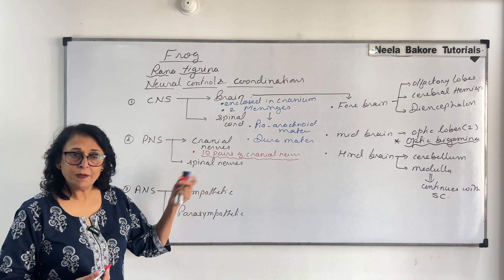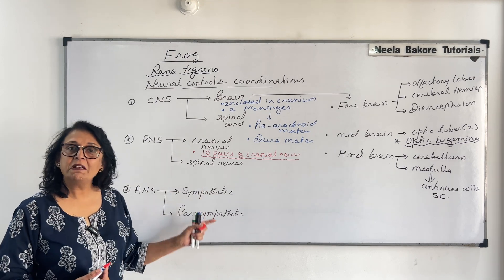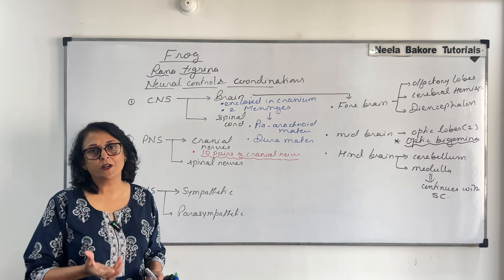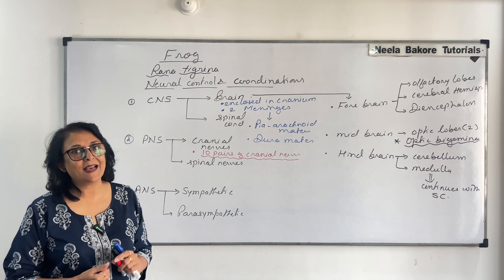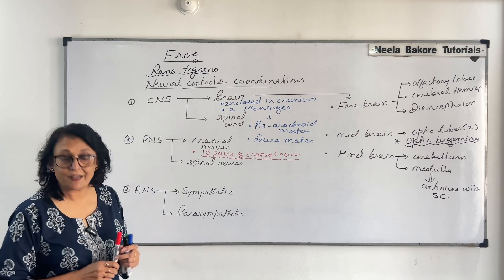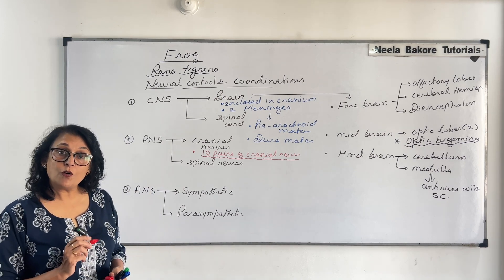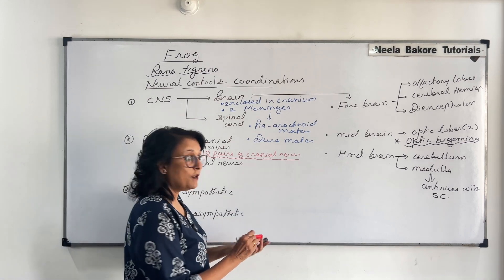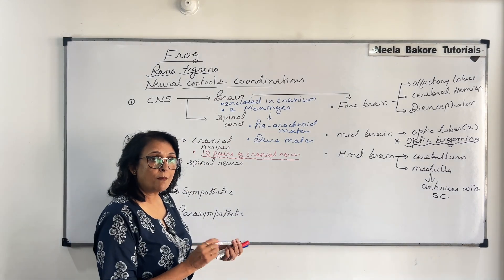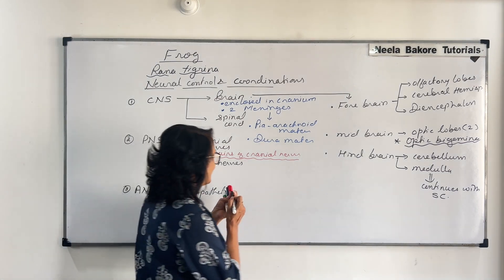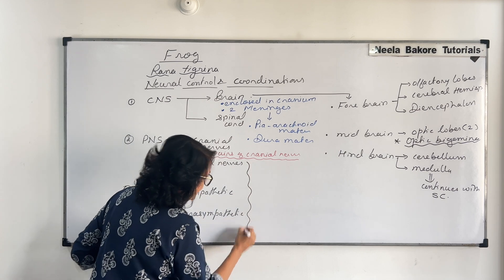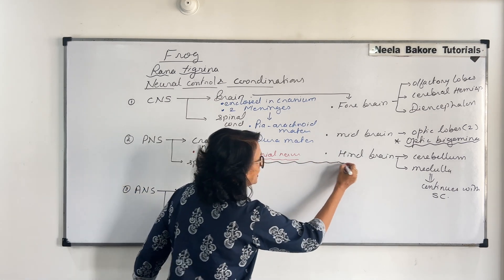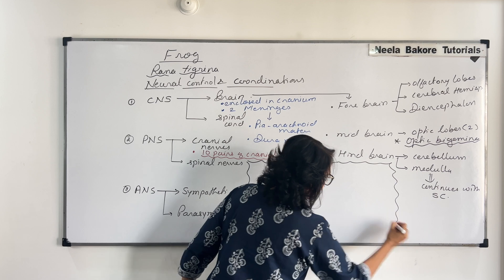The spinal nerves arise from the spinal cord. The sympathetic and parasympathetic nervous system work pretty much the same as they do in our case. Whenever we talk of neural control and coordination, we also talk about the sense organs. So now let us take the sense organs.